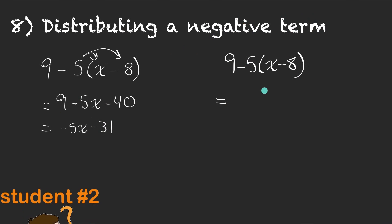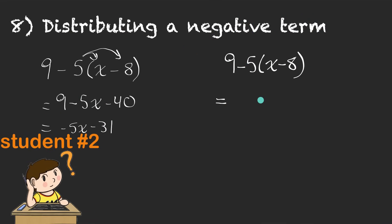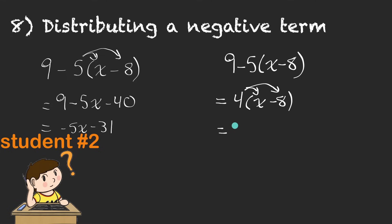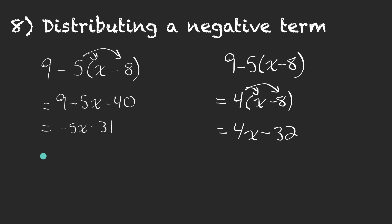All right, to start this one, I'm just going to start collecting some like terms. I've got a 9 minus 5, that's 4. It's going to be easier if I do that first. And now I'll distribute the 4 in. I've got 4x, and then minus 4 times 8, that's 32. Nice.